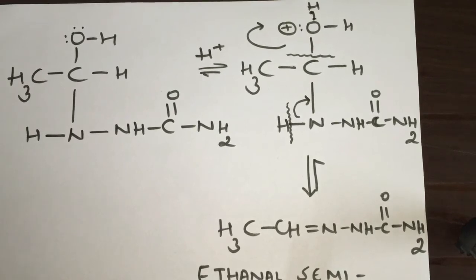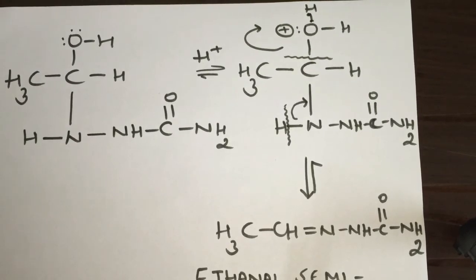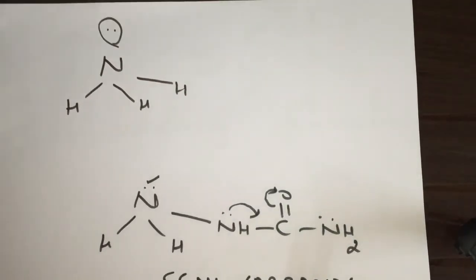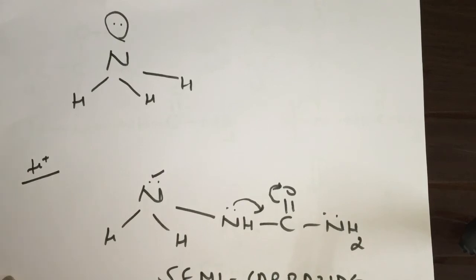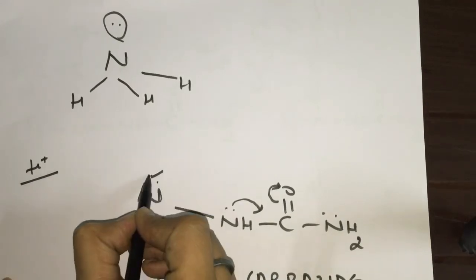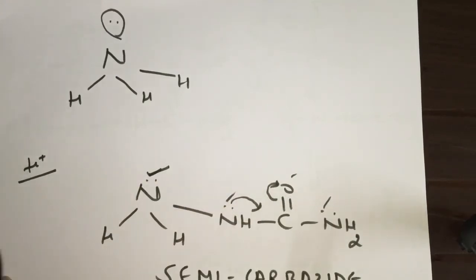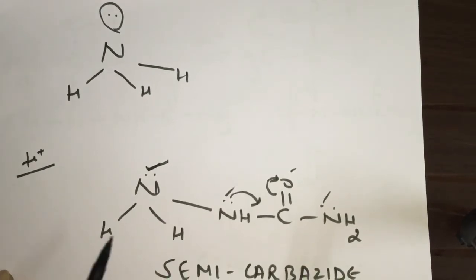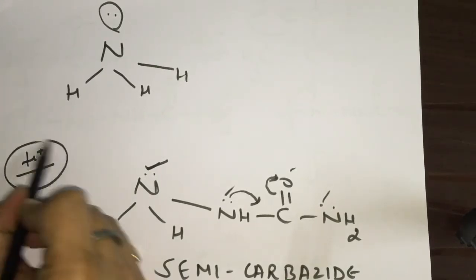The reaction occurs under optimum acidic conditions — not highly acidic conditions. Why not highly acidic? If the conditions are highly acidic, the concentration of H+ ions will be very high. These H+ ions will protonate the nucleophile (semicarbazide's nitrogen), and it will no longer be able to act as a nucleophile.